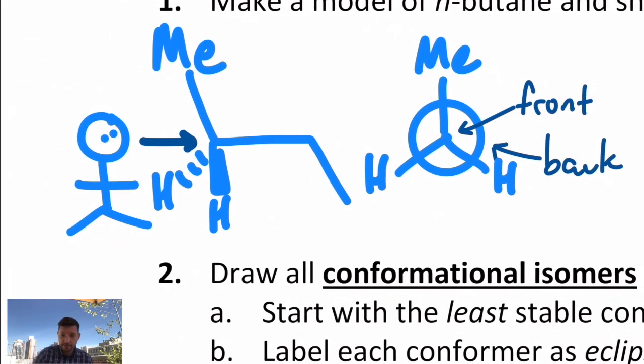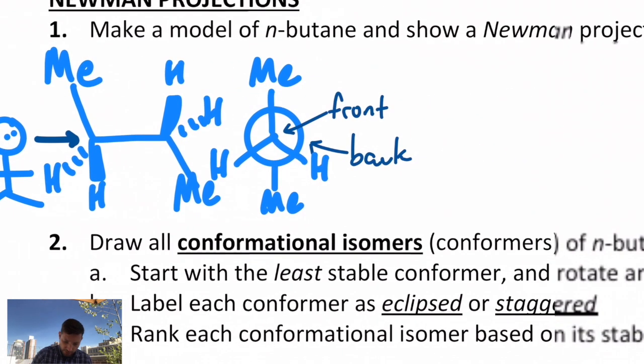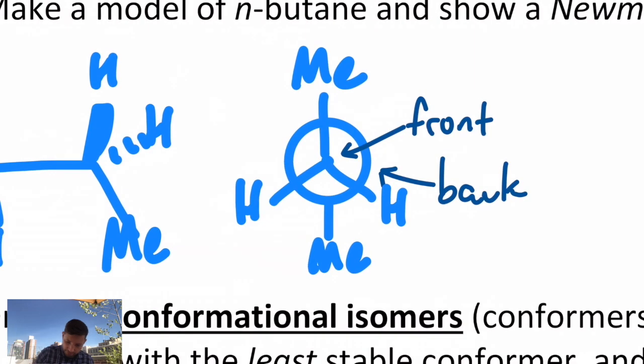And notice how we draw this. We extend the line all the way to that dot to show that those bonds are coming off of the carbon in the front. The carbon in the back is the same thing. They're just arranged in a different way. I have a methyl, but relative to this stick figure guy, it's pointing straight down. And then I also have two hydrogens.